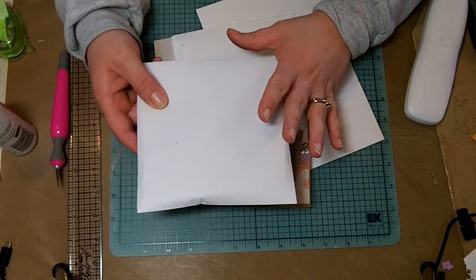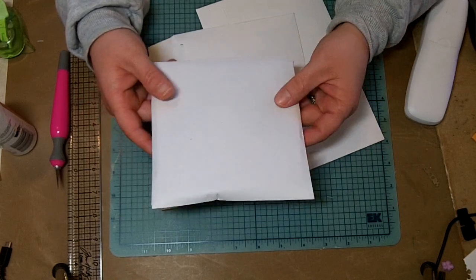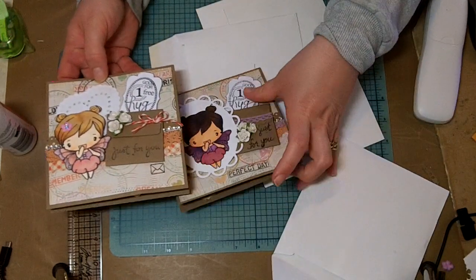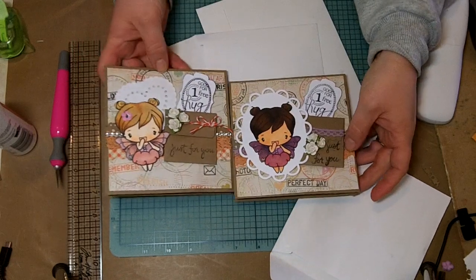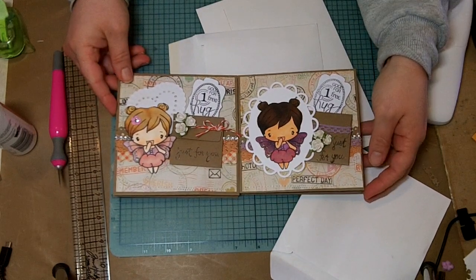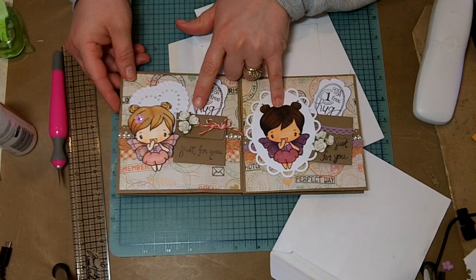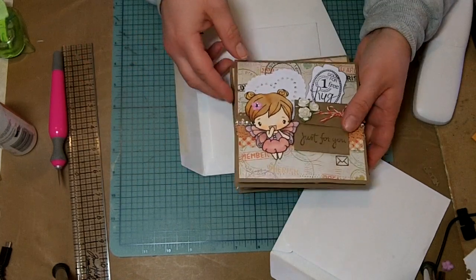Sometimes if I'm going to mail them, I'll stick them inside of a bubble wrap envelope and mail them that way too. Here's my other card. I'm mailing these off to some kids that have cancer for Valentine's Day. There they are, and I believe the stamp is a Flutter Anya from The Greeting Farm.